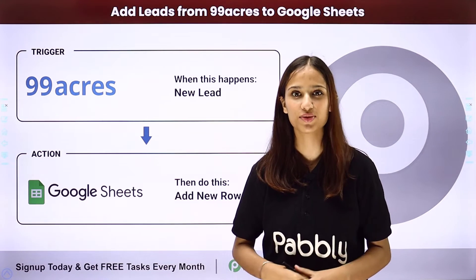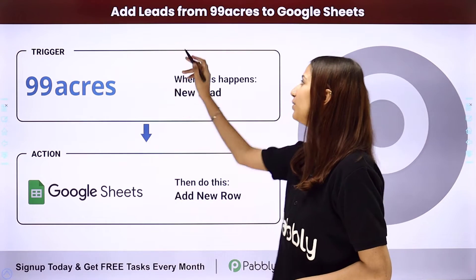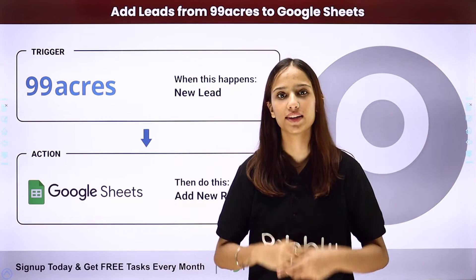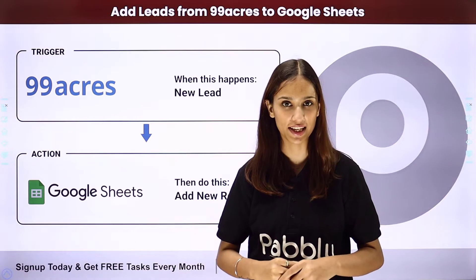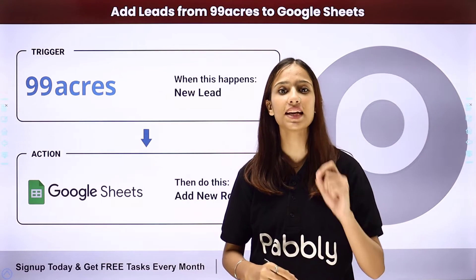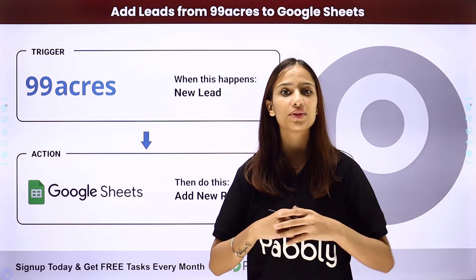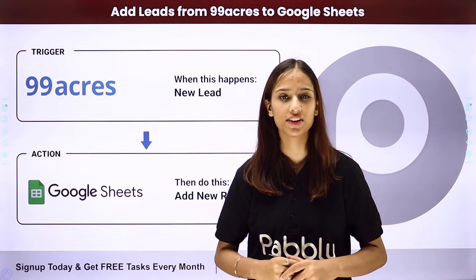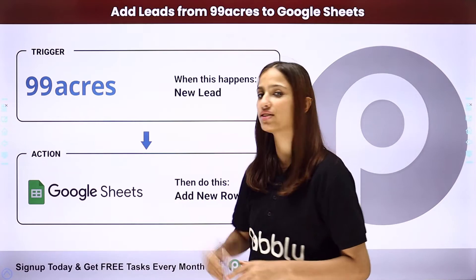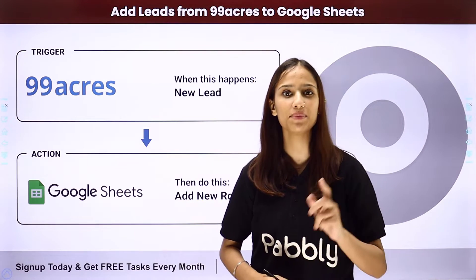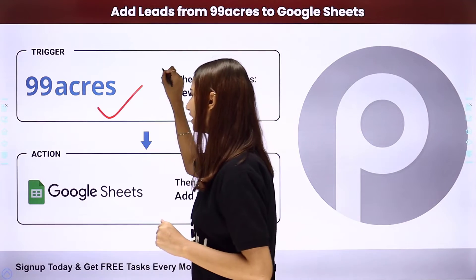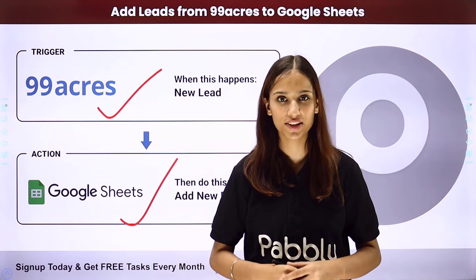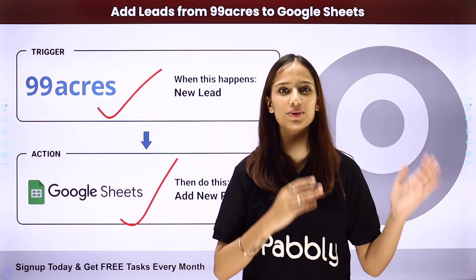Hello everyone, welcome back to Pabbly. In today's video we will learn how to add leads from 99 Acres to Google Sheets. The objective is that whenever a new lead is received through 99 Acres, I wish to add those details automatically to my Google Spreadsheet. To do that, I need to build an integration between these two applications using Pabbly Connect, where my trigger application will be 99 Acres and my action application will be Google Sheets.